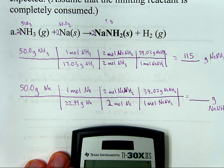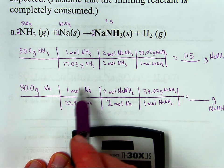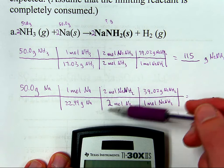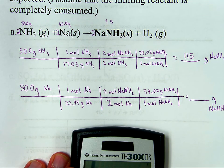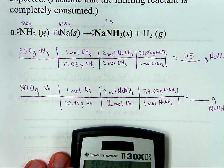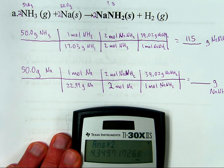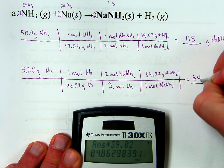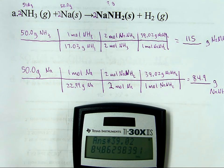Same thing for the bottom one. By the way, I can tell already it's going to be three significant figures because there's four, there's four, and these are all infinite significant figures because it's like exactly two moles or exactly one mole has that much mass. So 50 divided by 22.99 times 2 divided by 2 times 39.02. That's 84.9 grams of the product. So there we go. I now have two numbers.